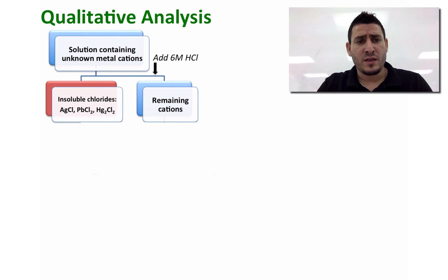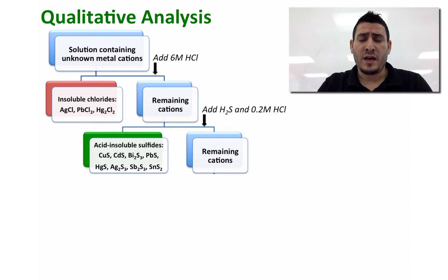Adding 6 molar HCl will precipitate the silver, the lead, and the mercury 1 ions, and the remaining ions will remain soluble in the solution. In the next step I can add hydrogen sulfide and 0.2 molar of HCl. I can separate more ions like copper, cadmium, bismuth, lead, etc., and the remaining ions will remain soluble in the solution.